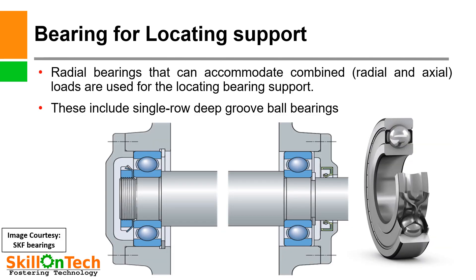Bearing for locating support. The bearing in the locating position, which is typically positioned at the drive end of a machine, supports the shaft radially and locates it axially in both directions. It must therefore be fixed in position both on the shaft and in the housing. Suitable bearing types for locating support include deep groove ball bearings, which accommodate both radial and axial loads.